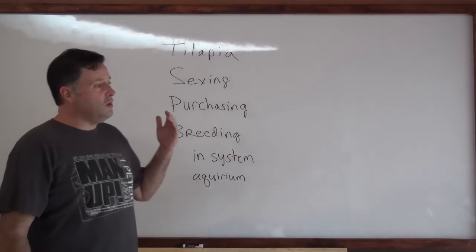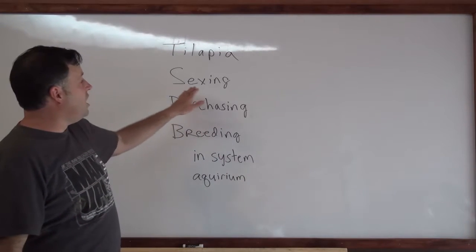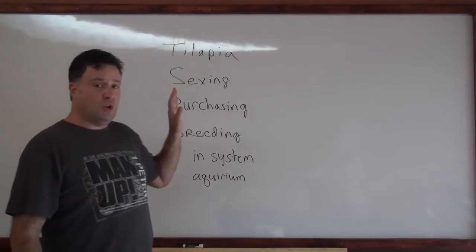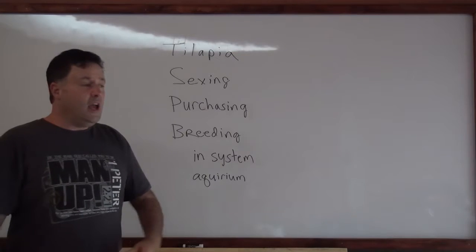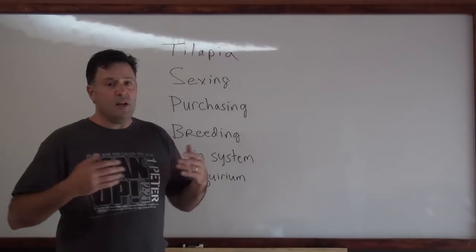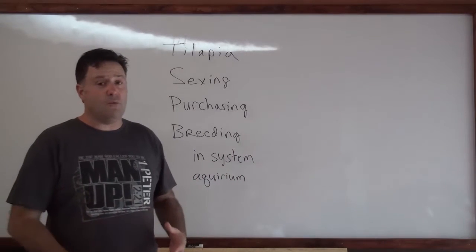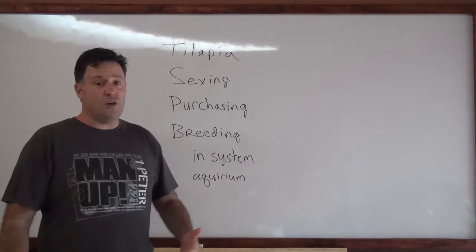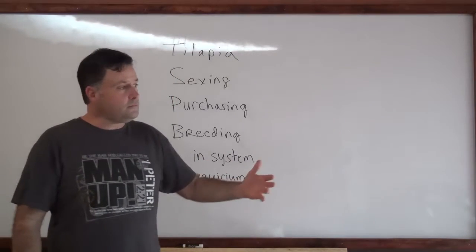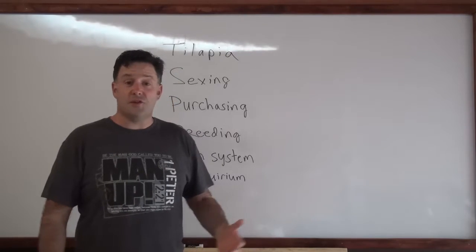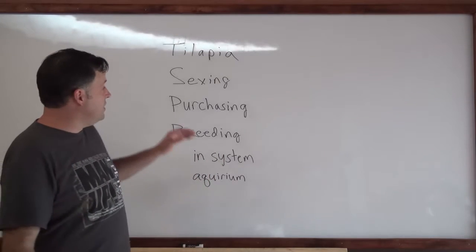If you're going to have a mixture of male and female in your system, you definitely want to understand sexing. You want to be able to look at a fish and determine if it's a male or female. It's very important because if you have too many males and some females, you're going to get a lot of aggression and fighting within your system. Literally, in our system, I had a female that was producing very well, but the male broke her jaw because of the aggression. So you have to be cautious about this.